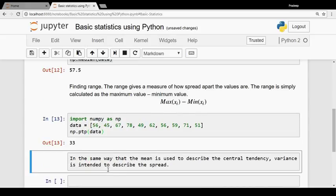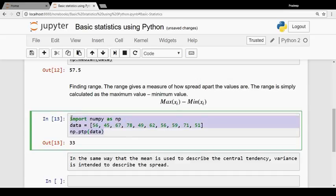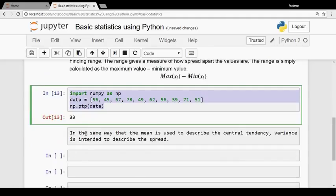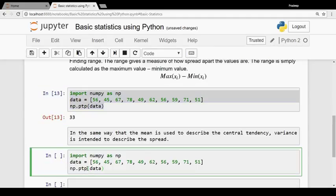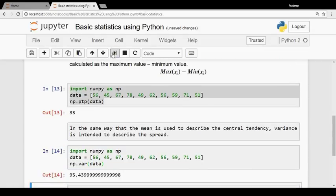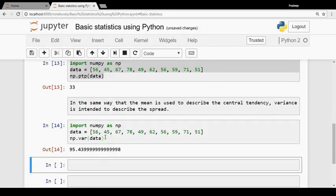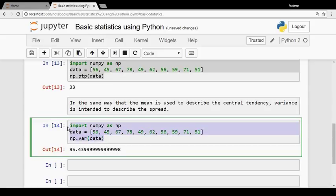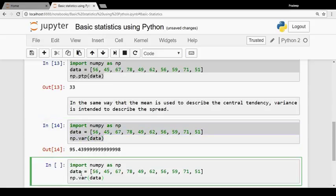Now let's find the variance. In the same way that the mean is used to describe central tendency, variance is intended to describe the spread. Let's find the variance for the same data. You will get 95.44, and if you want to find the standard deviation, it will be 9.76933.